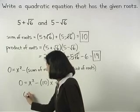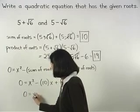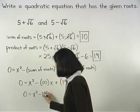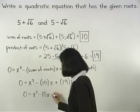Or simply, 0 equals x squared minus 10x plus 19.